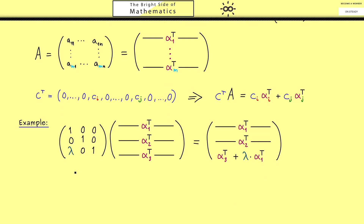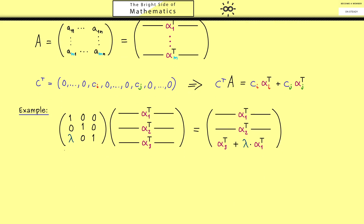In summary, this 3 times 3 matrix describes the row operation we want, and it is an invertible matrix. This is easy to see because we can immediately write down the inverse: we simply undo the row operation by subtracting the first row, so the matrix looks exactly the same but with minus lambda. We give this matrix a name — it is called Z — and in the index we put the corresponding rows: the 3 means we change the third row, and then plus lambda-1 means we add the first row scaled by lambda.